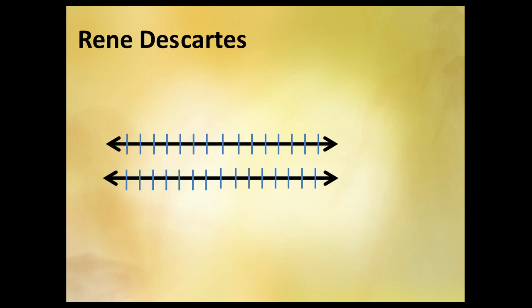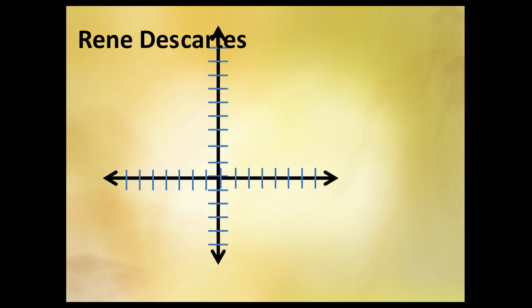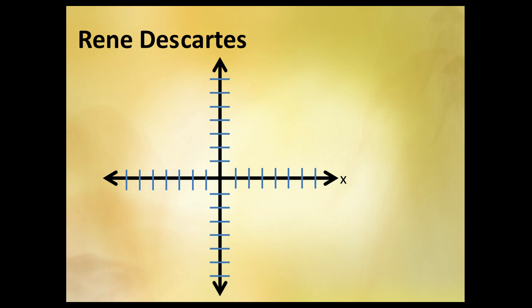So, he took two number lines and flipped one of them and made them perpendicular. One formed the x-axis, one formed the y-axis, and where they met was called the origin.